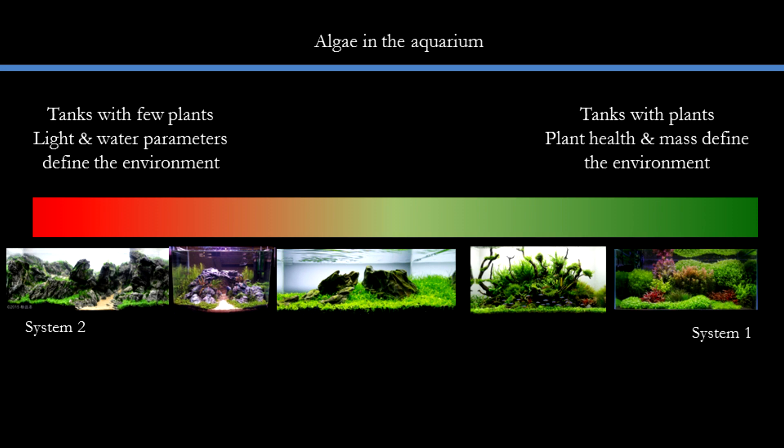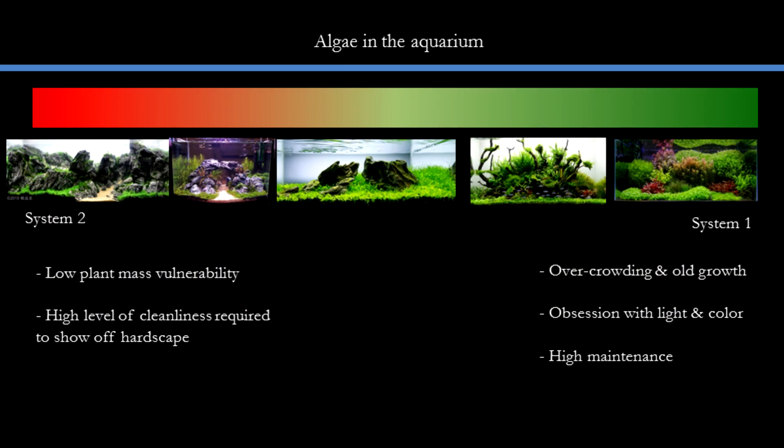Both System 1 and System 2 have their vulnerabilities. For people doing System 2, it's less forgiving towards mistakes as there are fewer plants in the tank, and yet a high level of cleanliness is required to show off the rocks in the hardscape. For many Dutch-style tanks doing System 1, people become over-obsessed with strong lights thinking it will give better coloration in their plants — and this is not always the case. Other issues arise if plants get too overcrowded and pruning is not done regularly, causing growth to stop and algae to invade.